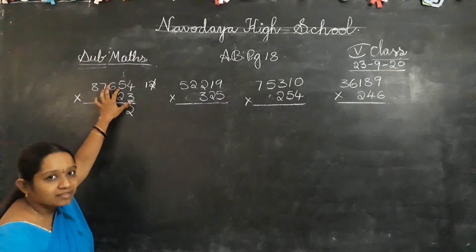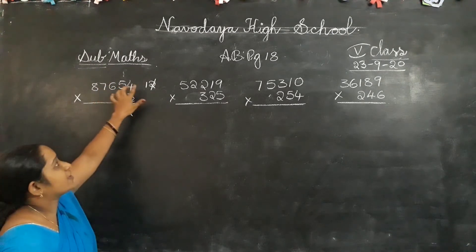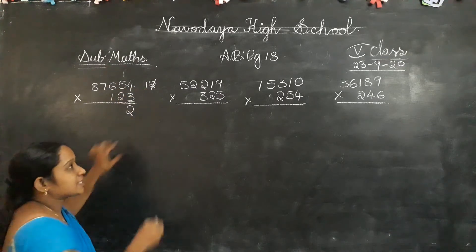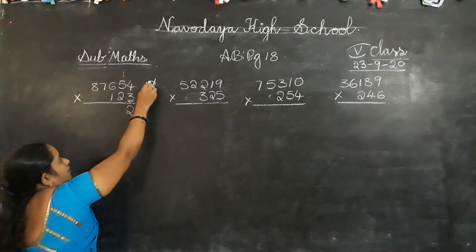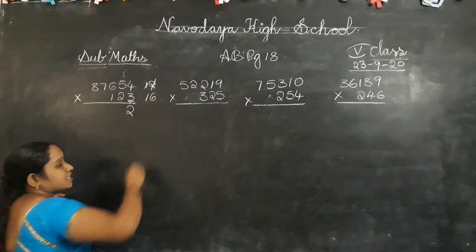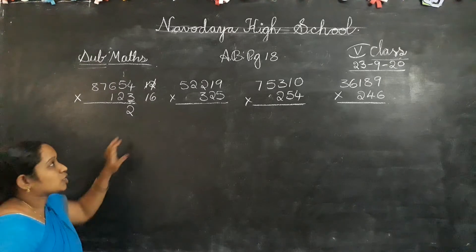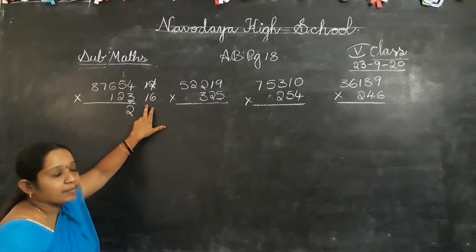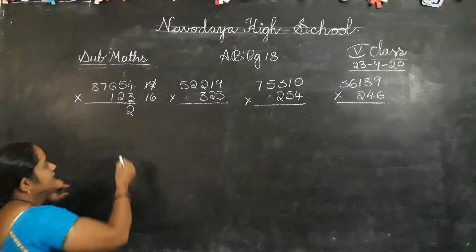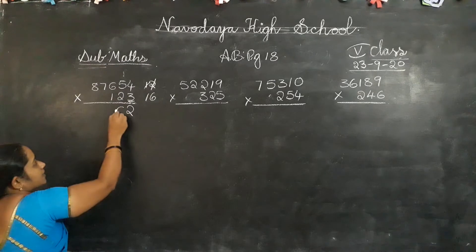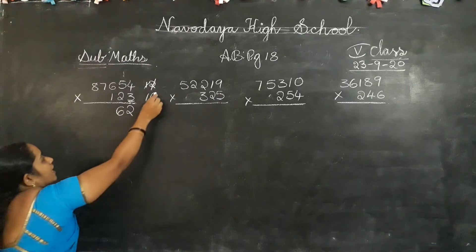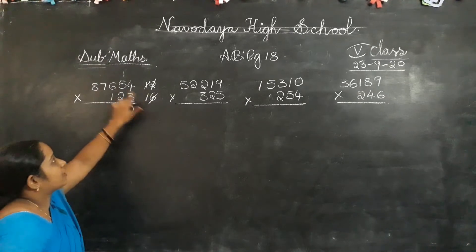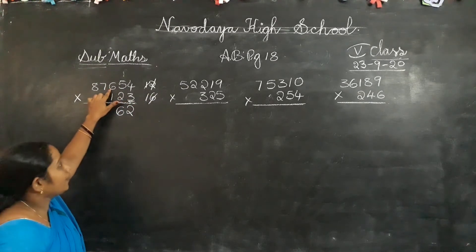3 fives are 15. 15 plus 1 carry? 16. This is also a 2-digit number. So write the 1's place digit in the answer place, and this number is carry forward to the next number.